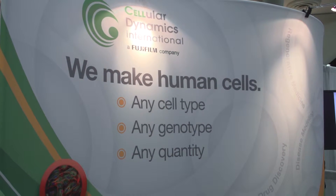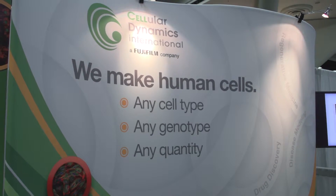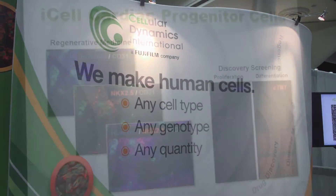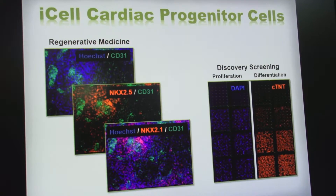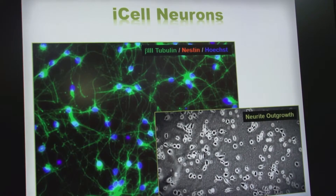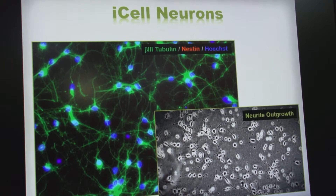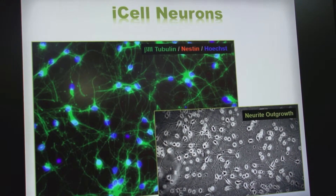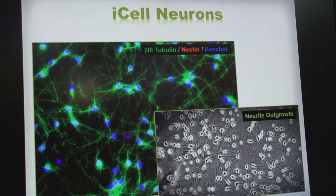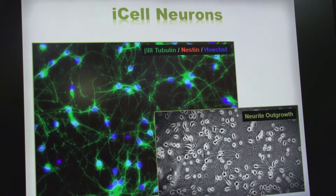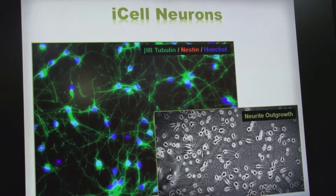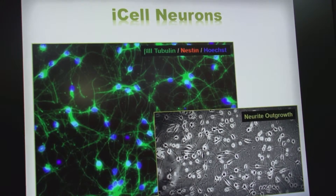In addition to that, we're able to leverage a number of IPS banks that are being generated. One in particular is the California Institute of Regenerative Medicine here in California, which has funded a bank of 3,000 donors that we are producing the IPS cells for. It represents 11 different diseases, and what's compelling about that is that we now have the ability to put disease into a dish based on the genetics of the donor.